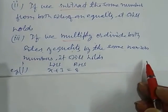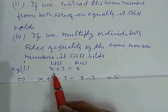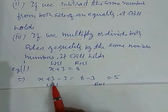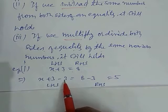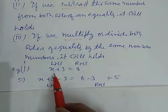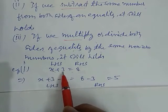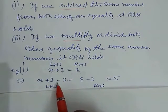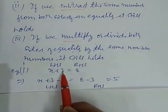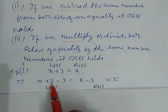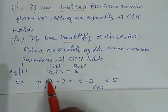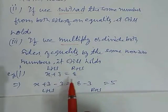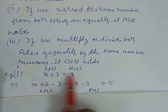Let's take an example to understand this. Here, there is an equation: x plus 3 equals 8. This is the left-hand side and this is the right-hand side. We subtract 3 from both sides because we want to separate the variable. The variable comes with these numerals, so to solve this, we need to remove the numeral. Since 3 is positive, we subtract 3 to remove it.